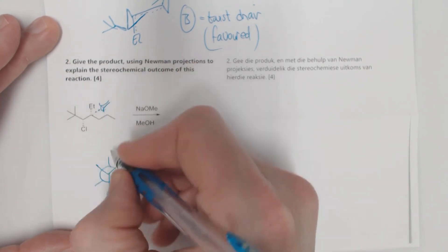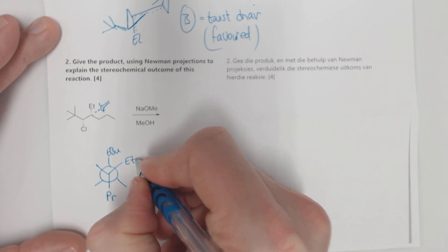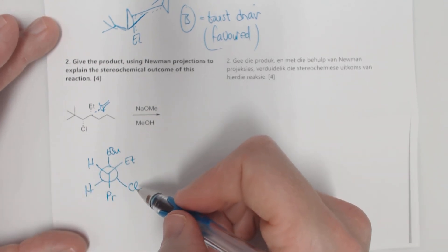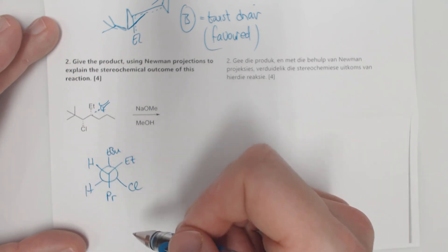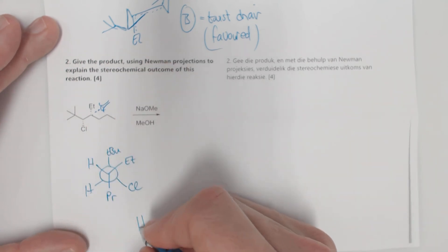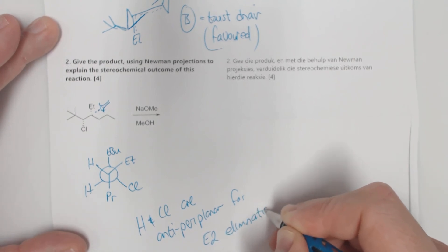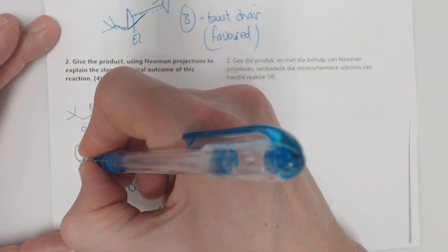Some of you drew out the enantiomer and got it incorrect in the Newman projection, but essentially the H and Cl are anti-periplanar for E2 elimination. And so the base comes in, which is OMe minus, picks up the proton, this goes in like this, chlorine leaves, and the t-butyl and ethyl are on the same side, which is what's actually given already in the product over there.